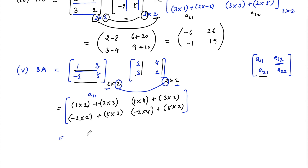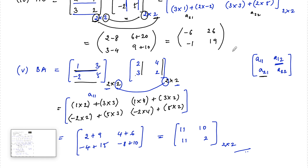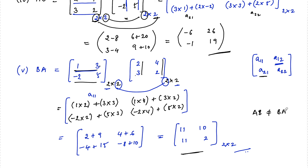Computing: 2 plus 9 is 11, 4 plus 6 is 10, negative 4 plus 15 is 11, and negative 8 plus 10 is 2. So BA equals the 2 by 2 matrix 11 10 11 2. We observe that AB and BA are different, so matrix multiplication is not commutative — AB is not equal to BA.